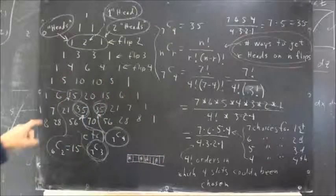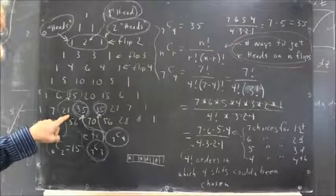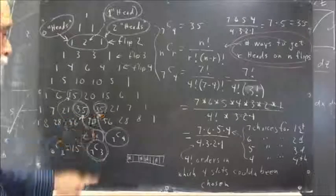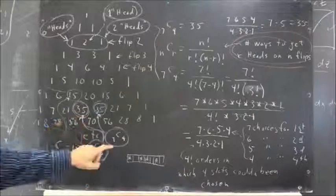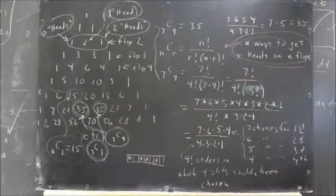They could give us 1 way to get no heads, 7 ways to get 1, 21 ways to get 2, 35 ways to get 3, 35 ways to get 4. So there's our 7C3 and 7C4, and so on.